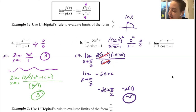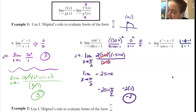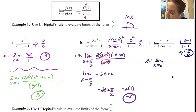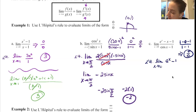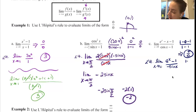Looking at letter c — putting 0 in place of x: e⁰ is 1, minus 1, minus 1. This is also 0/0 — indeterminate — which means we can use L'Hopital. The derivative of eˣ is eˣ, the derivative of x is 1, the derivative of cosine is -sine, and the derivative of 1 is 0. Now try 0 again: e⁰ is 1, minus 1. Sine of 0 is 0. So we've got 0/0 again.